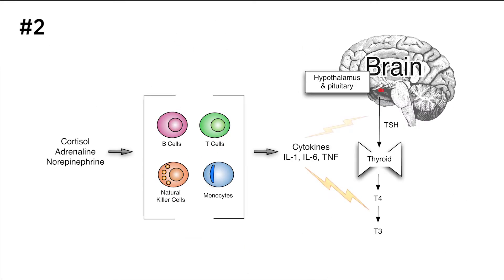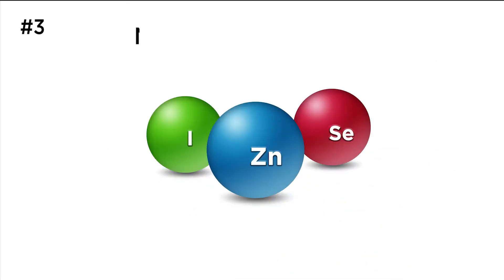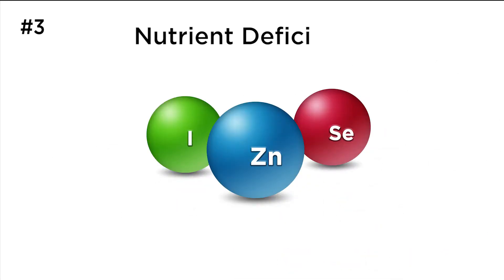Number two: the stress hormones cortisol, adrenaline, and norepinephrine activate white blood cells to create inflammatory chemical messengers called cytokines. These cytokines will decrease the production of TSH and prevent the conversion of T4 to T3.